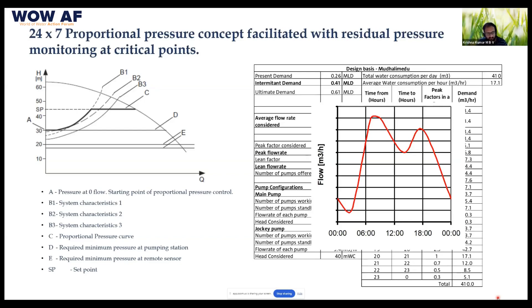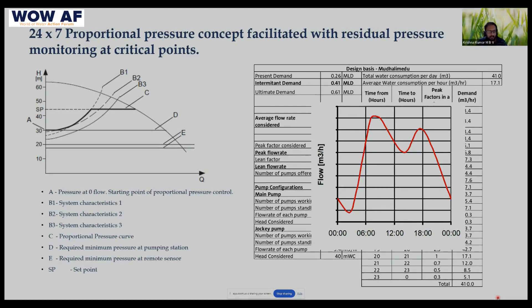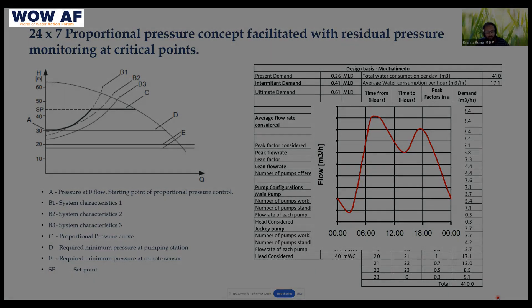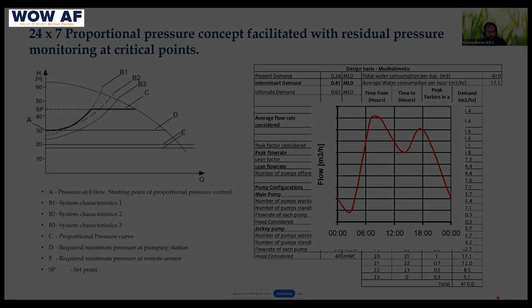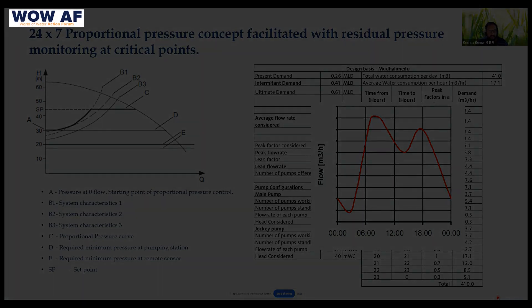When using a dead-end system, this pumping station can also supply water to newly formed nodes. In a distribution network there are many nodes, and at every node we calculate pressure and flow. Based on that, the hydraulic model calculates pressure and flow requirements for each zone — what we call DMA, District Metering Areas.